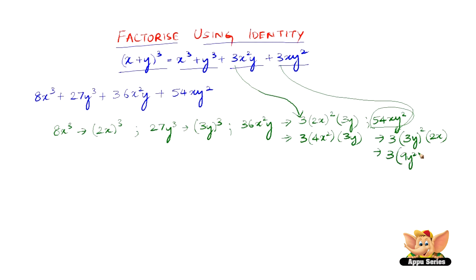So I can rewrite this as 3 × 9y² × 2x. Now let us put this together and write it as (2x)³ + (3y)³ + 3(2x)²(3y) + 3(2x)(3y)².